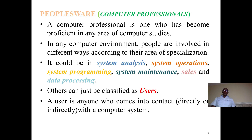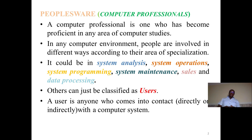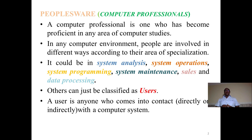If you recall in the previous modules, we talked about the components of a computer system and agreed that there are basically three: the hardware, the software, and the papersware. So today we are going to look at the papersware — in other words, the professionals who participate in computer and computing machines.